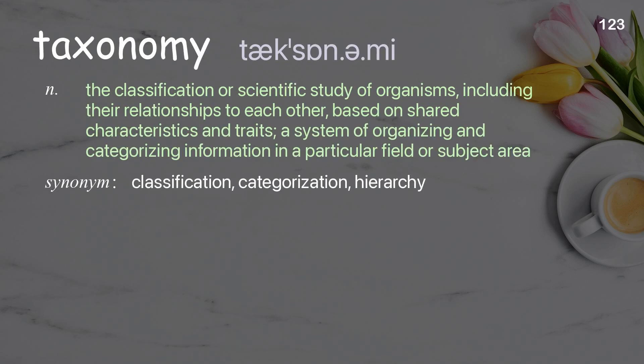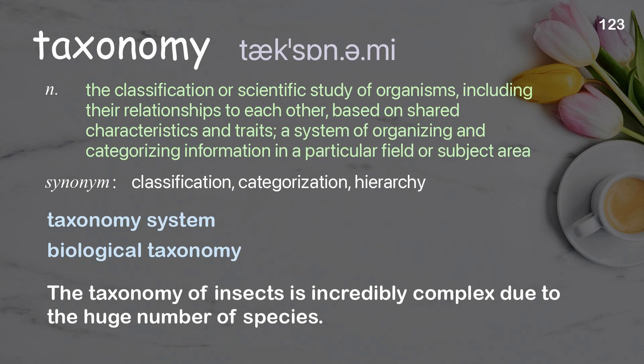Taxonomy: The classification or scientific study of organisms, including their relationships to each other, based on shared characteristics and traits; a system of organizing and categorizing information in a particular field. Examples: taxonomy system, biological taxonomy. The taxonomy of insects is incredibly complex due to the huge number of species.